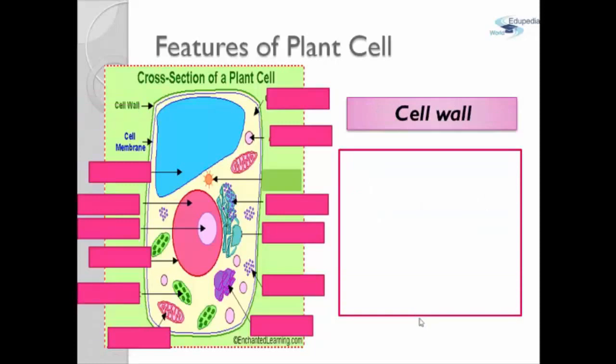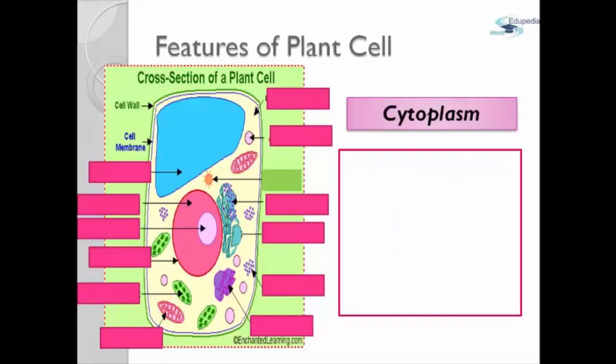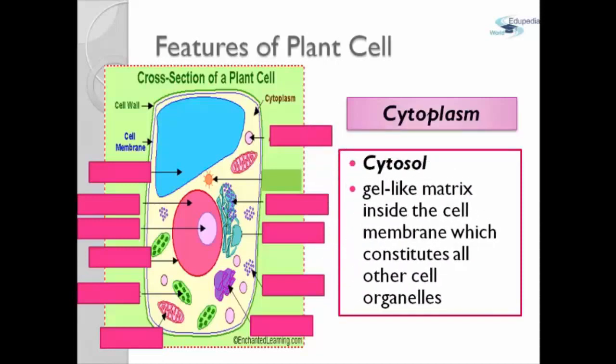The second part is the cell wall which is the origin covering of the plant cell and it is a salient feature of plant cell. The third part is cytoplasm also called cytosol. It is a gel-like matrix inside the cell membrane which constitutes all other cell organelles.